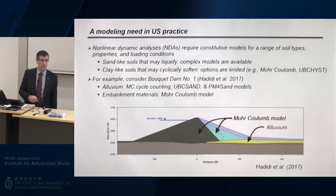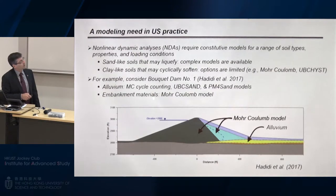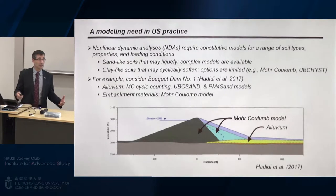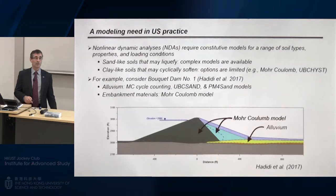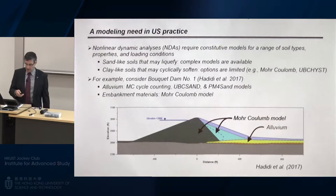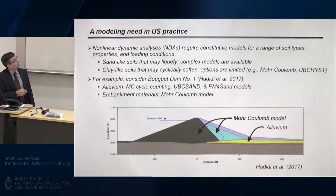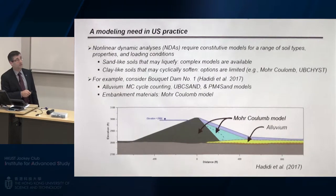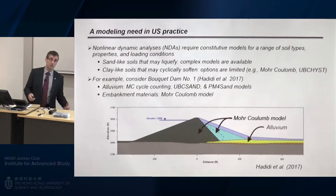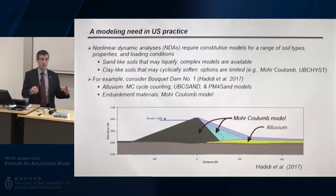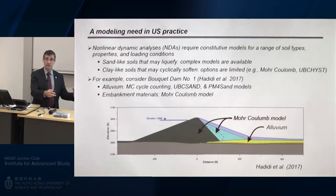This was very useful because you could then look at modeling uncertainty — if you use three different constitutive models calibrated the same way, how much do the results change? We'd like to have multiple models available. When it came to the embankment materials, representing them with a Mohr-Coulomb model — which is elastic-plastic and very simplistic — is a significant limitation. That's where we would like something to do better. For a model to be available for use in practice, the model first has to exist — and then has to be implemented in a form accessible to industry.